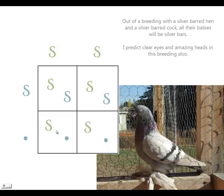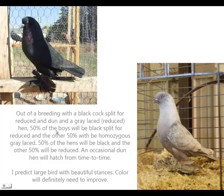Out of a breeding with a black cock split for reduced and dun, and a gray-laced hen — 50% of the boys will be black split for reduced, and the other 50% will be homozygous gray-laced, which is two copies of reduced. 50% of the hens will be black, and the other 50% will be reduced. An occasional dun hen will hatch from time to time. Out of this breeding, I predict two large birds with beautiful stances. Color will definitely need to improve.